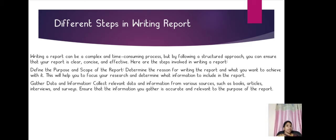Steps in writing a report: Writing a report can be a complex and time-consuming process, but when you follow a structured approach you can ensure that the report is clear, concise, and effective. Step 1 — define the purpose and scope of the report. Step 2 — gather data and information. In the first step, you should give your objective regarding your report. In the second step, you collect data from various sources like books, articles, interviews, and surveys — from primary or secondary data.